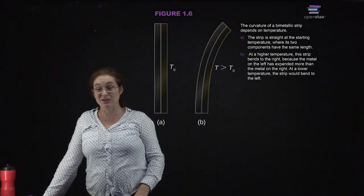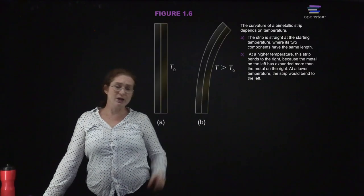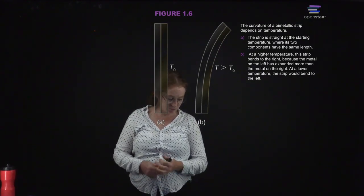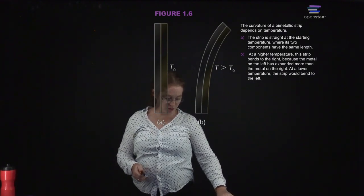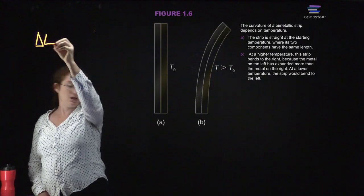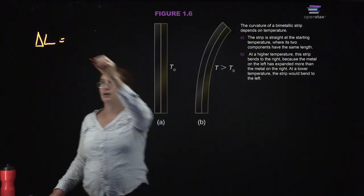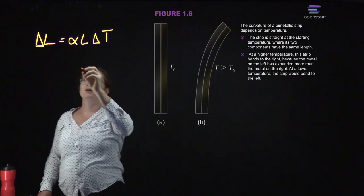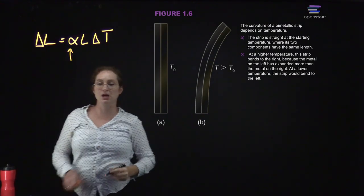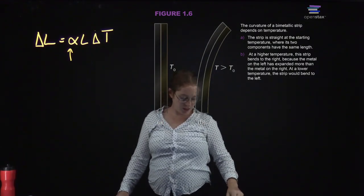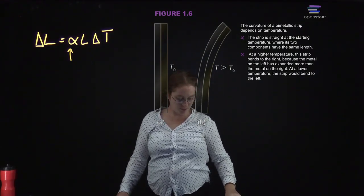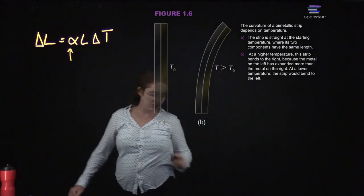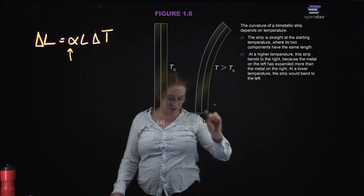You can use a bimetallic strip to measure changes in temperature. We quantify the changes in length using a coefficient of thermal expansion. The equation is ΔL = α·L·ΔT, and this coefficient is a property of the material itself. Your textbook has a number of different examples and you can look up the coefficients of thermal expansion.